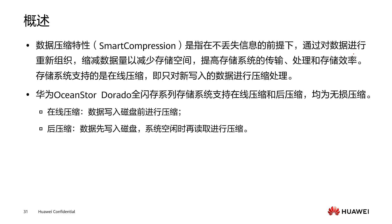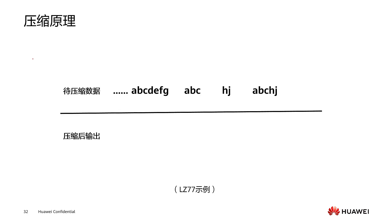Next, we continue to learn about the smart compression feature, which is the data compression feature. It refers to reorganizing our data without losing any information, reducing the amount of data to save storage space and improve the transmission and storage efficiency of the storage system. Huawei's OceanStore and Dorado series storage systems support online compression and post compression. Online compression compresses data before writing it to the disk, while post compression writes data to the disk first and then compresses it when the system is idle.